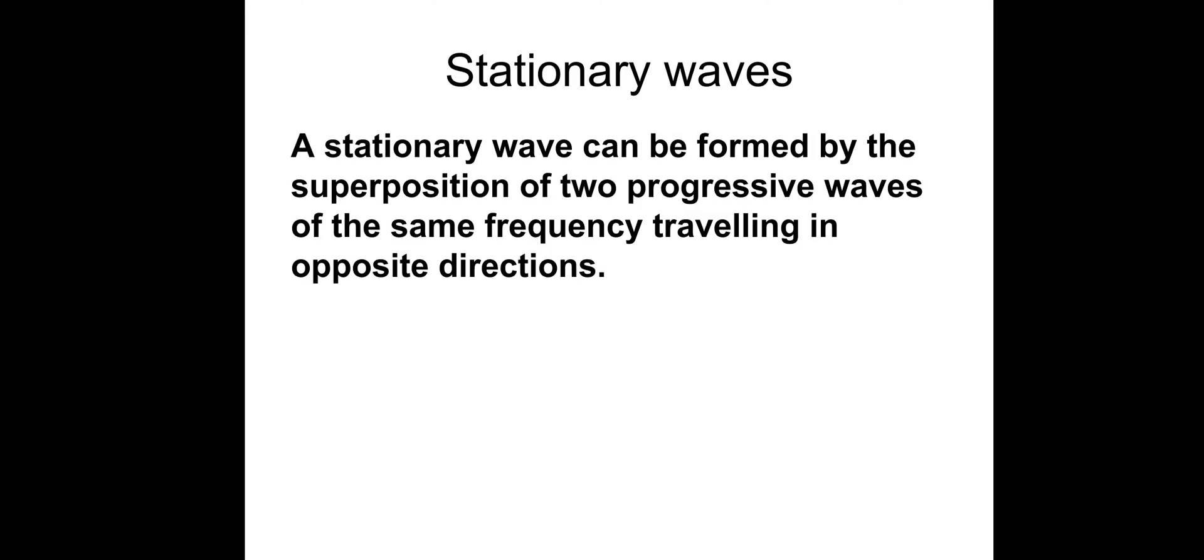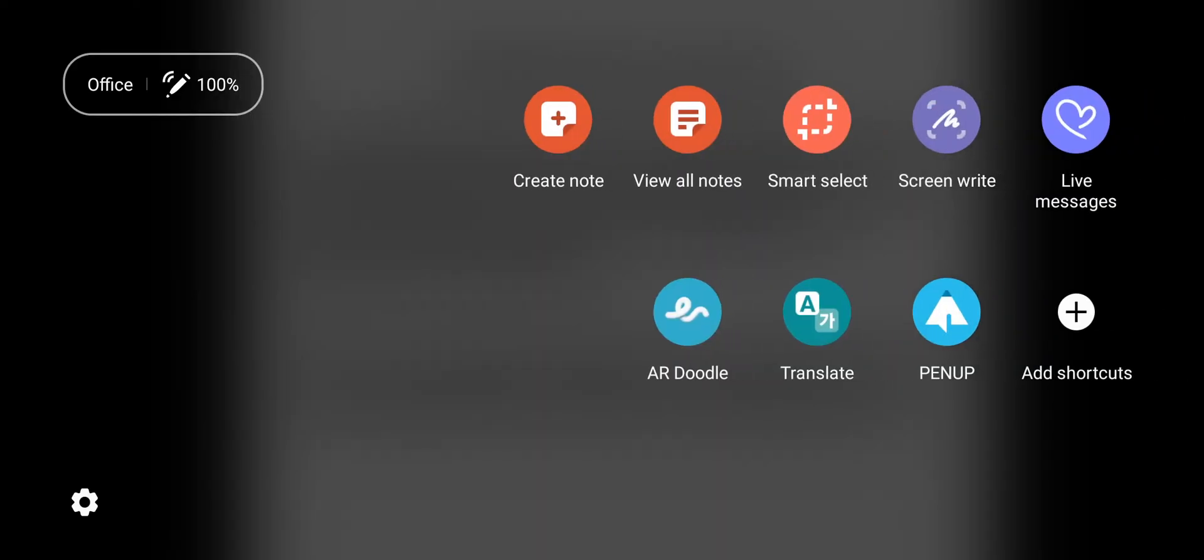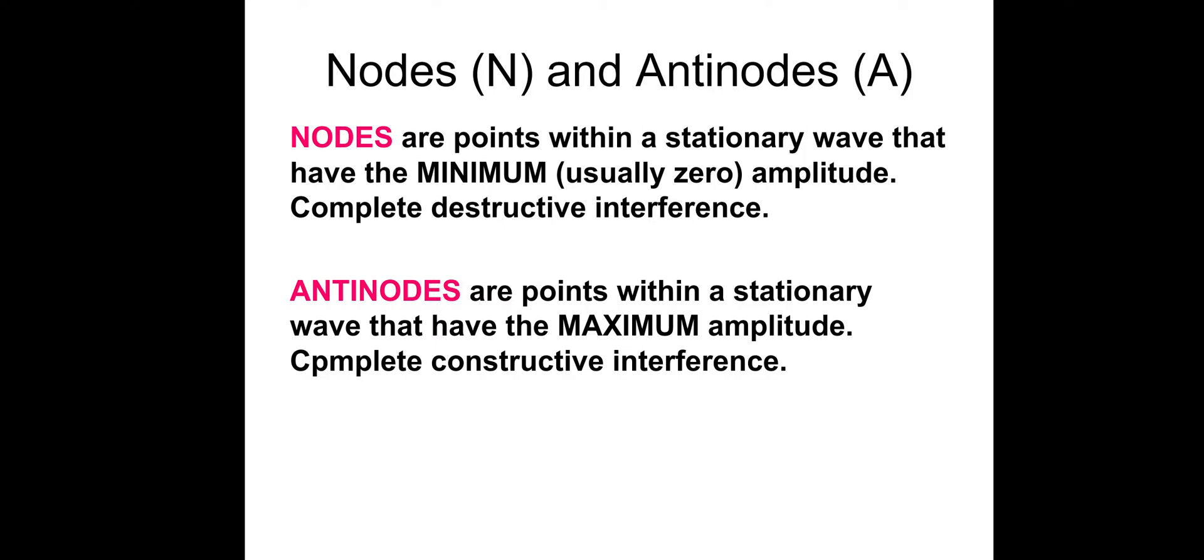Stationary waves. A stationary wave can be formed by the superposition of two progressive waves of the same frequency traveling in opposite directions. It's usually achieved by superposing a reflected wave with its incident wave. So a bit more information: nodes and antinodes. Nodes are points within a stationary wave that have the minimum, usually zero, amplitude. And then we have antinodes. Antinodes are points within a stationary wave that have the maximum amplitude or complete constructive interference.